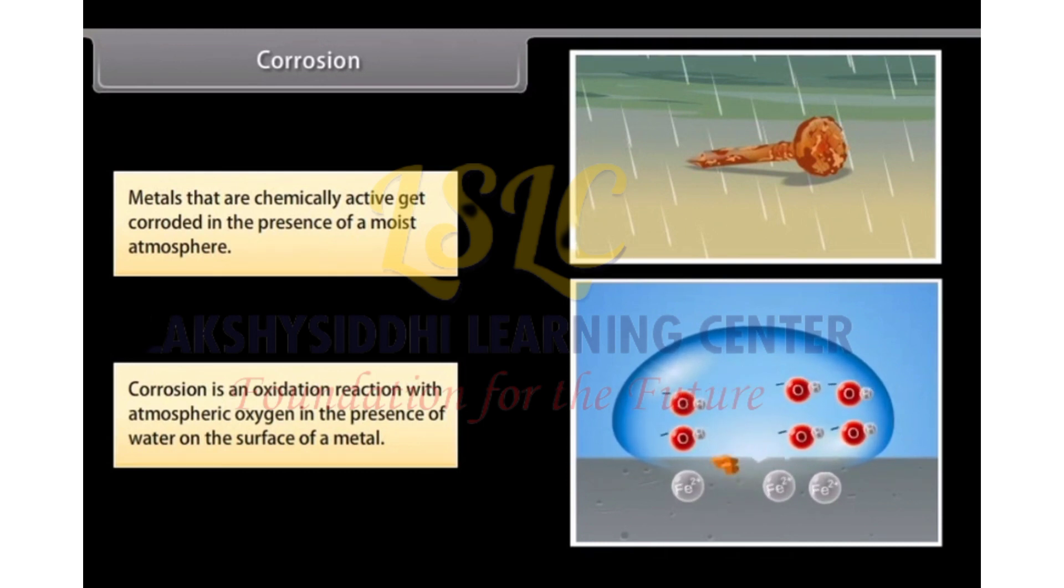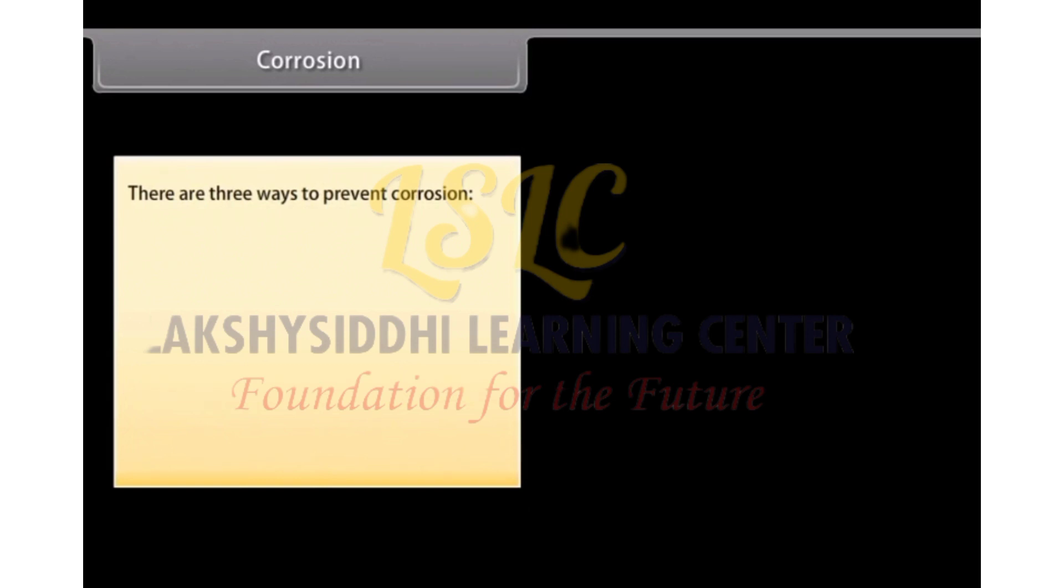For example, iron and aluminium corrode. However, non-reactive metals like gold, platinum, mercury do not corrode. There are three ways to prevent corrosion.